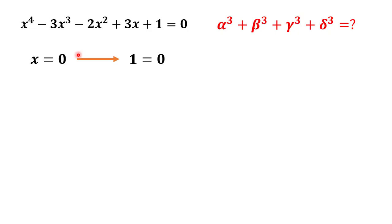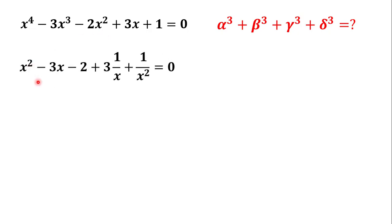By dividing this equation by x squared we get: x squared minus 3 times x minus 2 plus 3 times (1 over x) plus (1 over x squared) equals 0.